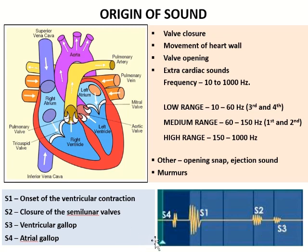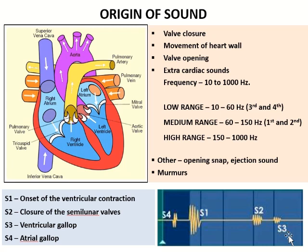The first sound, S1, is due to the onset of ventricular contraction, and S2 is due to closure of the semilunar valves. These two are related to heartbeats — we say lub and dub. So S1 corresponds to the sound heard as lub and S2 to dub. The third sound, S3, is created due to ventricular gallop, whereas S4 is due to atrial gallop.